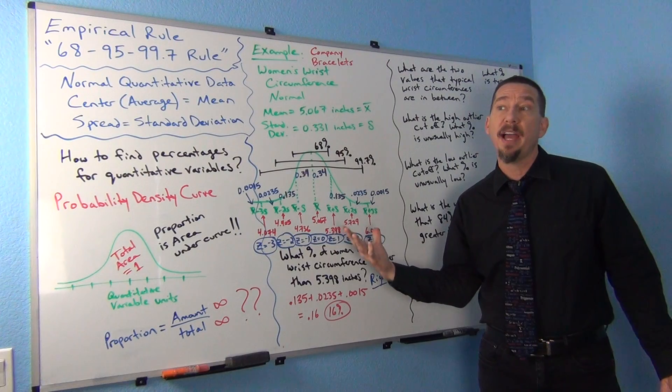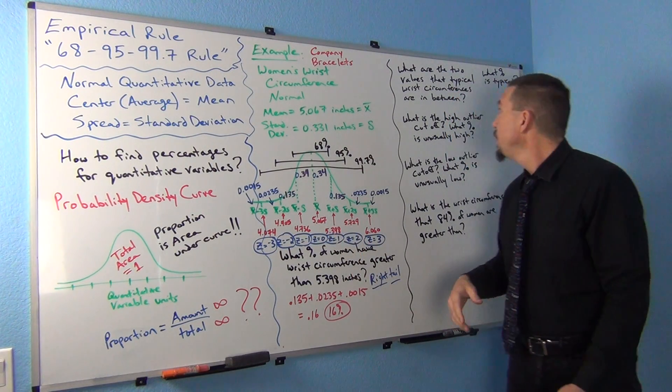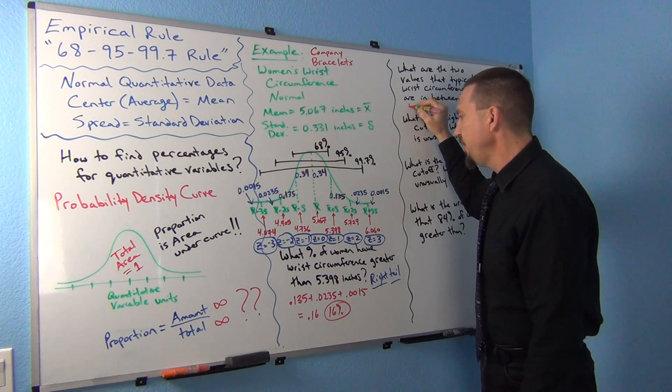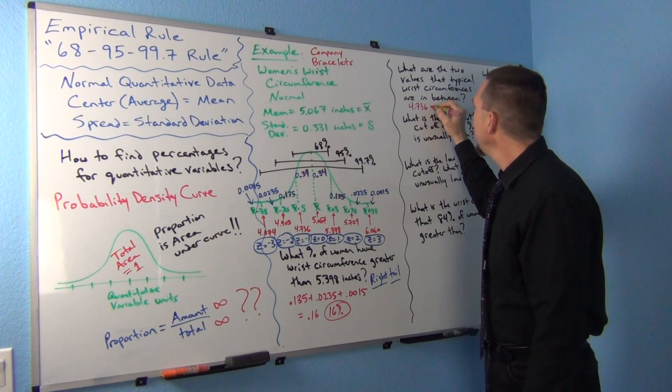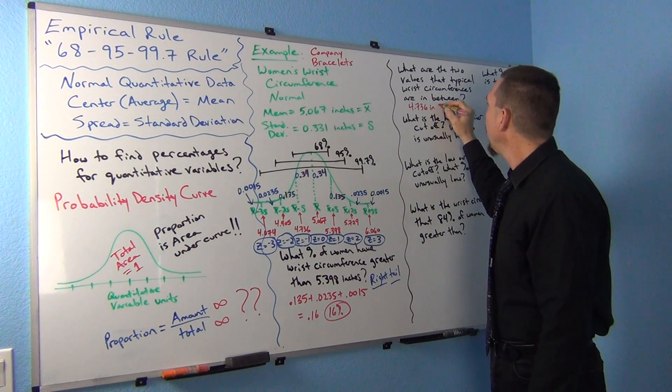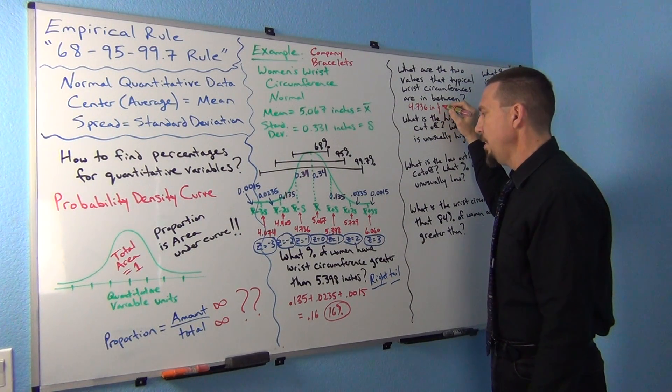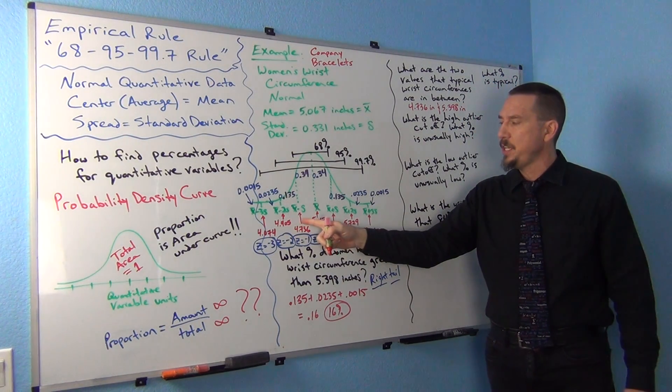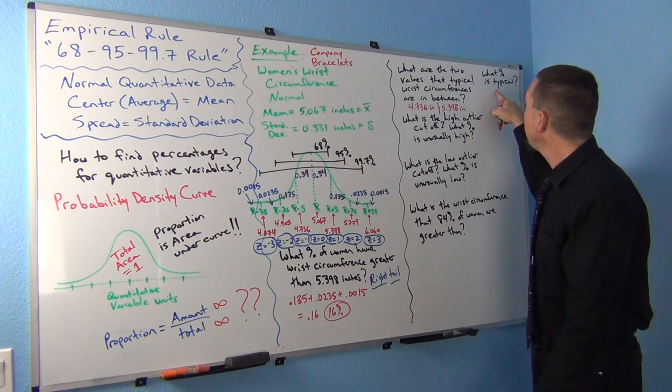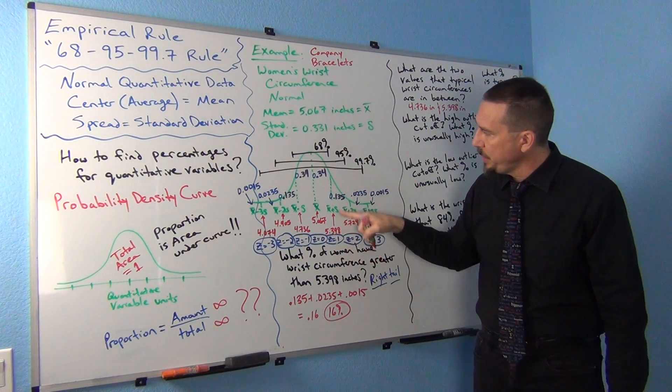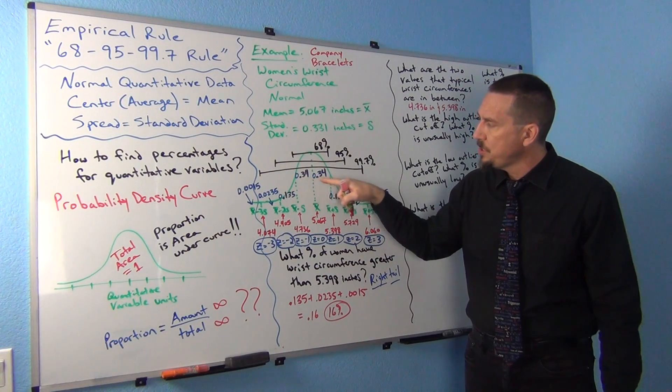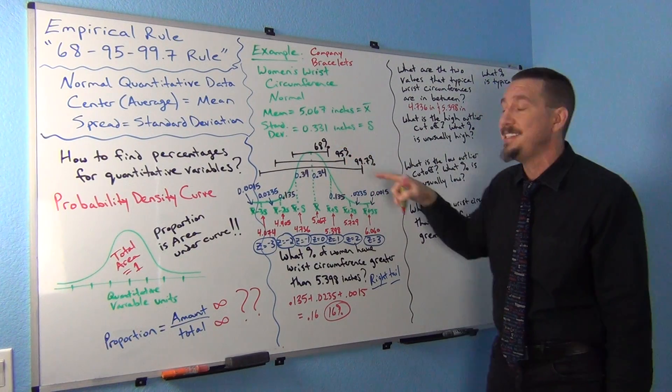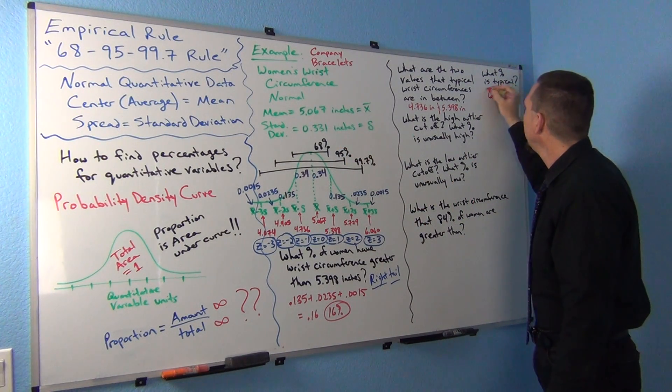These would be your typical value boundaries. So typical values would be between 4.736 inches and 5.398 inches. Those would be one standard deviation below to one standard deviation above. And notice what percentage is typical. If we look in between, we see that's two sections of 0.34, which adds up to 0.68, or the famous 68%.